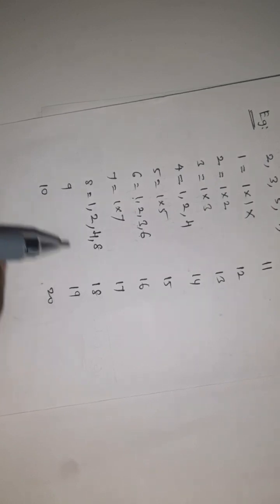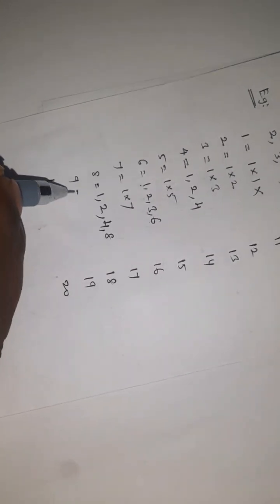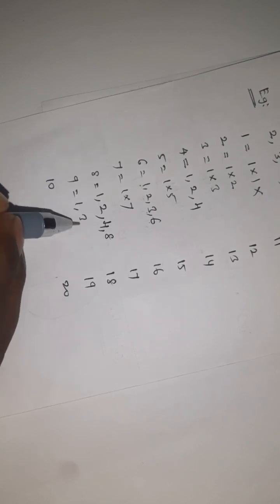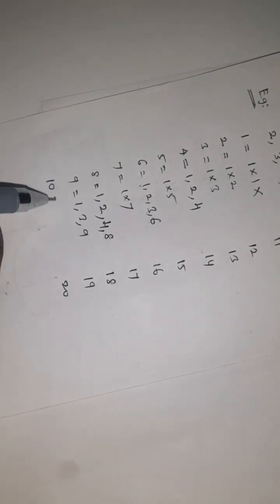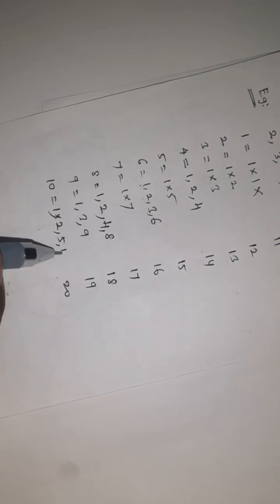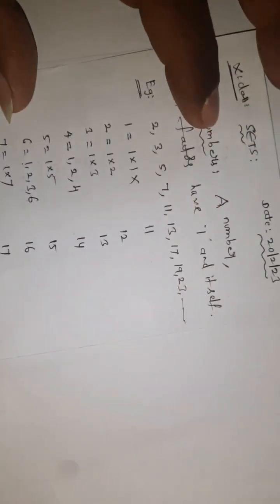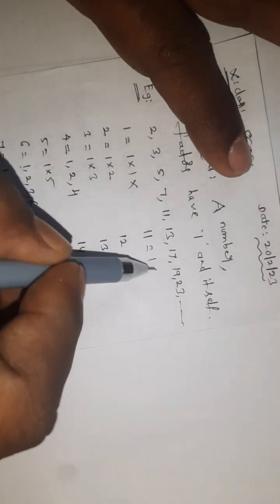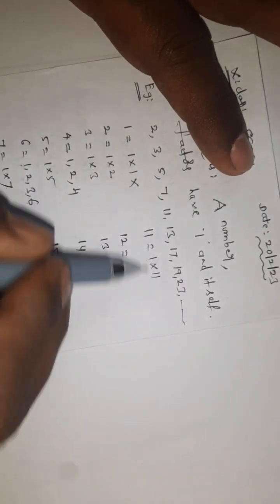Ninth number: 1 table, 3 times 3 is 9. Tenth number: 1 table, 2 times 5 is 10. Eleventh number: 1 times 11.